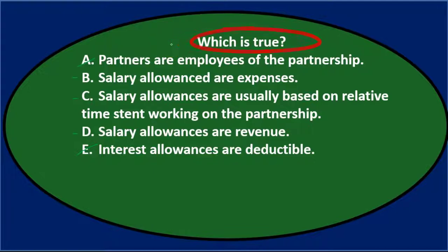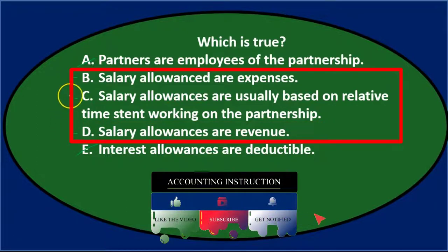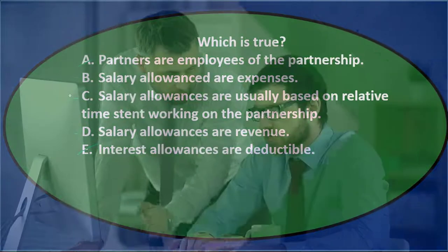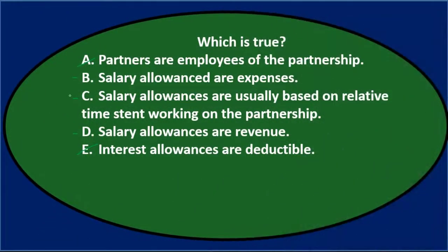Which is true? B) salary allowances are expenses, C) salary allowances are usually based on relative time spent working on the partnership, or D) salary allowances are revenue? If you see one longer, more detailed and specific answer, it's not always the case, but oftentimes it's the correct one — because the question is trying to list something correctly, eliminating factors that would be incorrect, which takes more precise terminology.